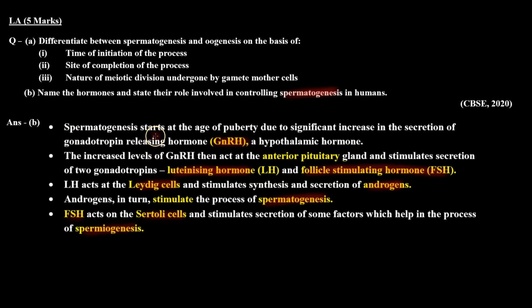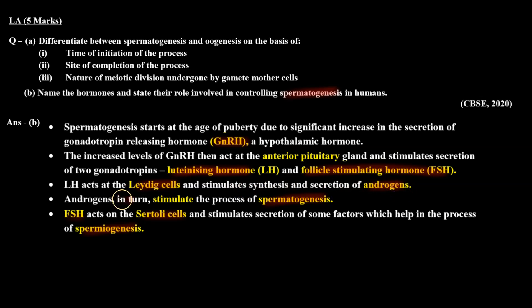Spermatogenesis starts at the age of puberty due to a significant increase in the secretion of gonadotropin releasing hormone, that is GnRH, a hypothalamic hormone. The increased levels of GnRH act at the anterior pituitary gland and stimulate secretion of two gonadotropins: luteinizing hormone LH and follicle stimulating hormone FSH. LH acts at the Leydig cells and stimulates synthesis and secretion of androgens, which in turn stimulate the process of spermatogenesis. FSH acts on the Sertoli cells and stimulates secretion of some factors which help in the process of spermiogenesis.